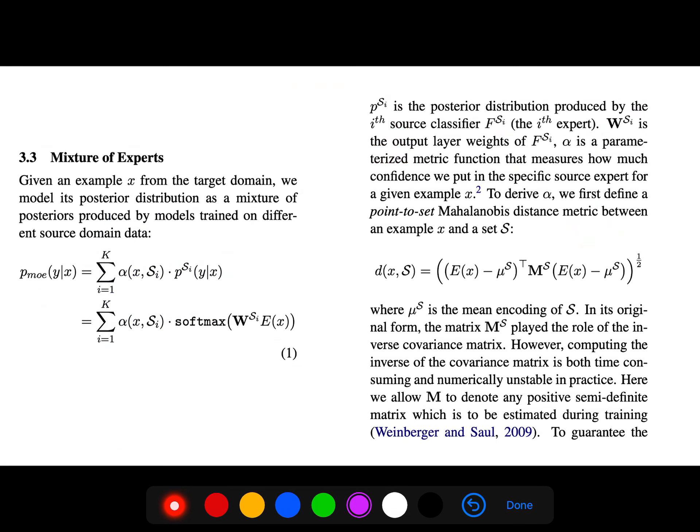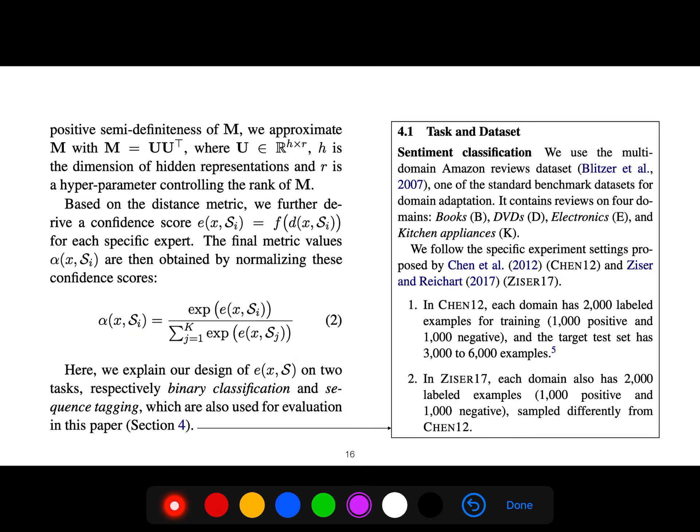And then here is the Mahalanobis distance that we want to learn. This is important - this is your feature extractor. We can learn μ_s, which is just a mean encoding of your source, that domain that you want to see the difference, the distance between the point and a set, that domain. And w sub si here is the output layer weights of f sub si. α is the parameterized metric function, and this α that I said, the parameterized metric function, can be learned like this.